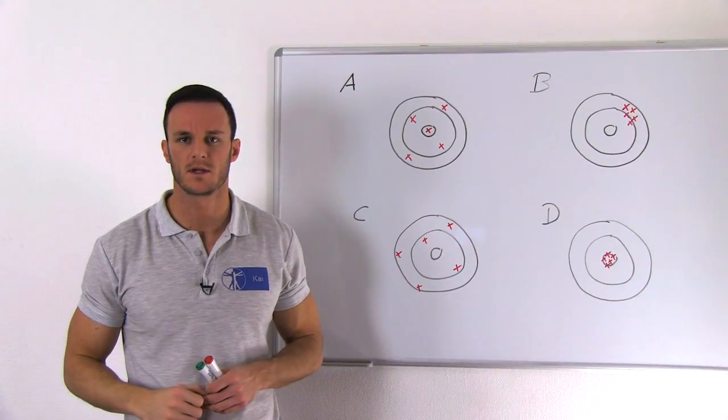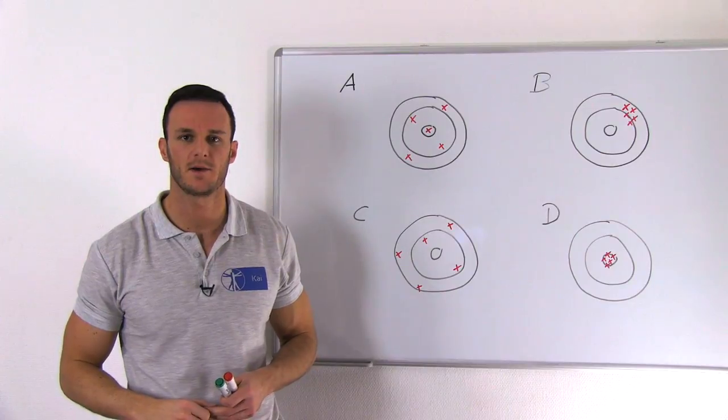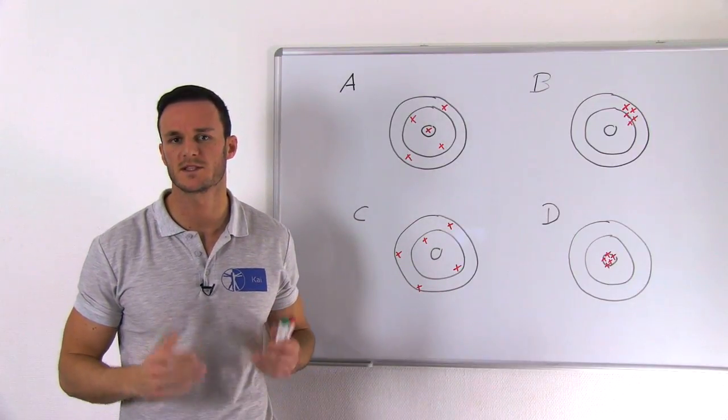Now let's look at both concepts of validity and reliability and how they relate to each other with the famous dartboard example. The bullseye represents the golden standard.